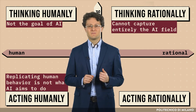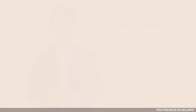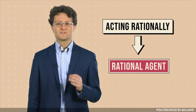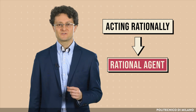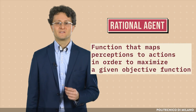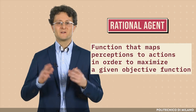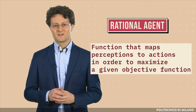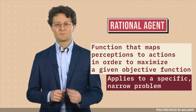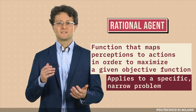This is the case of some bots — for instance, tic-tac-toe, checkers, and a Rubik's cube. The most common definition of AI is based on the idea of a rational agent, taking inspiration from acting rationally. A rational agent is a function that maps perceptions to actions in order to maximize a given objective function. A rational agent applies to a specific narrow problem, such as playing chess or identifying images.